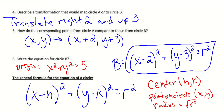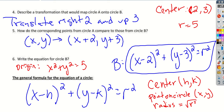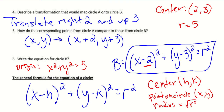If I have a center at positive 2, 3 and the radius is equal to 5, I'm going to take these two points and plug them into my general formula x minus h squared plus y minus k squared. Because there are negatives in the formula, positive 2 becomes x minus 2 squared, positive 3 becomes y minus 3 squared, and 5 squared is 25. So the equation is x minus 2 squared plus y minus 3 squared equals 25.